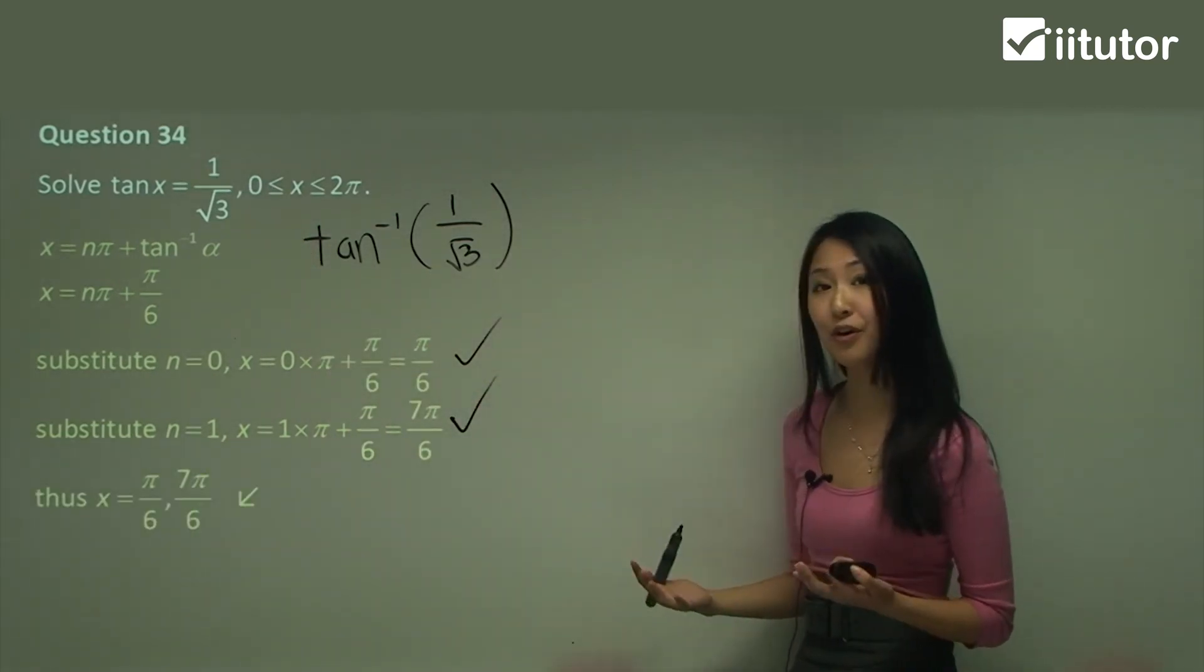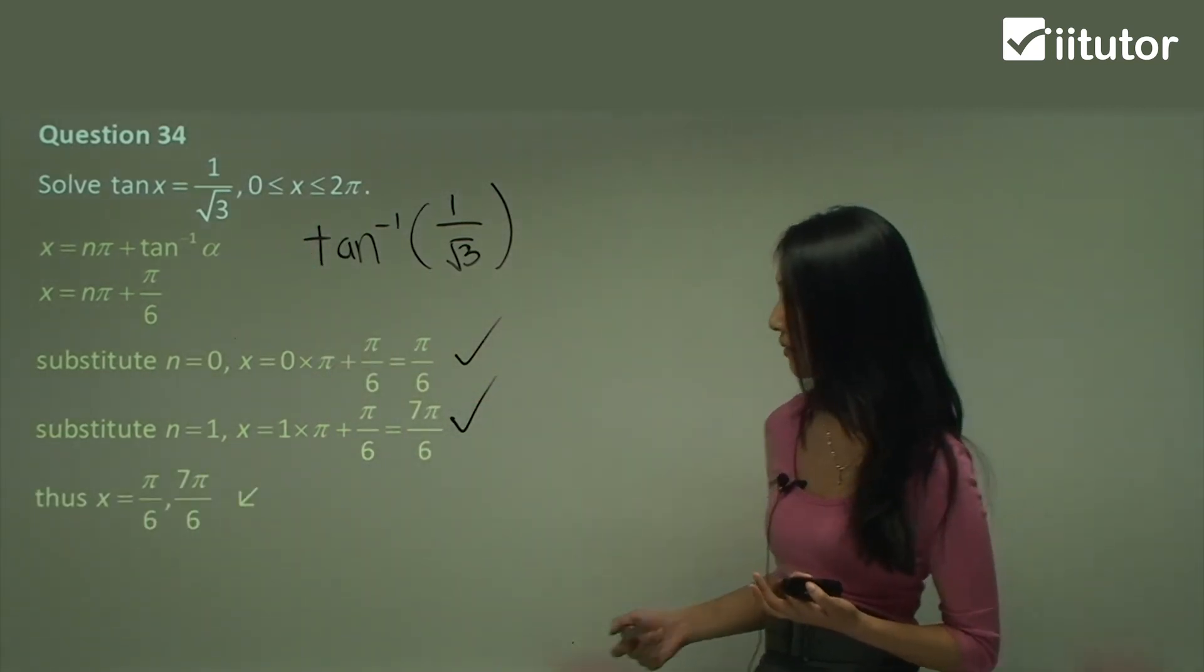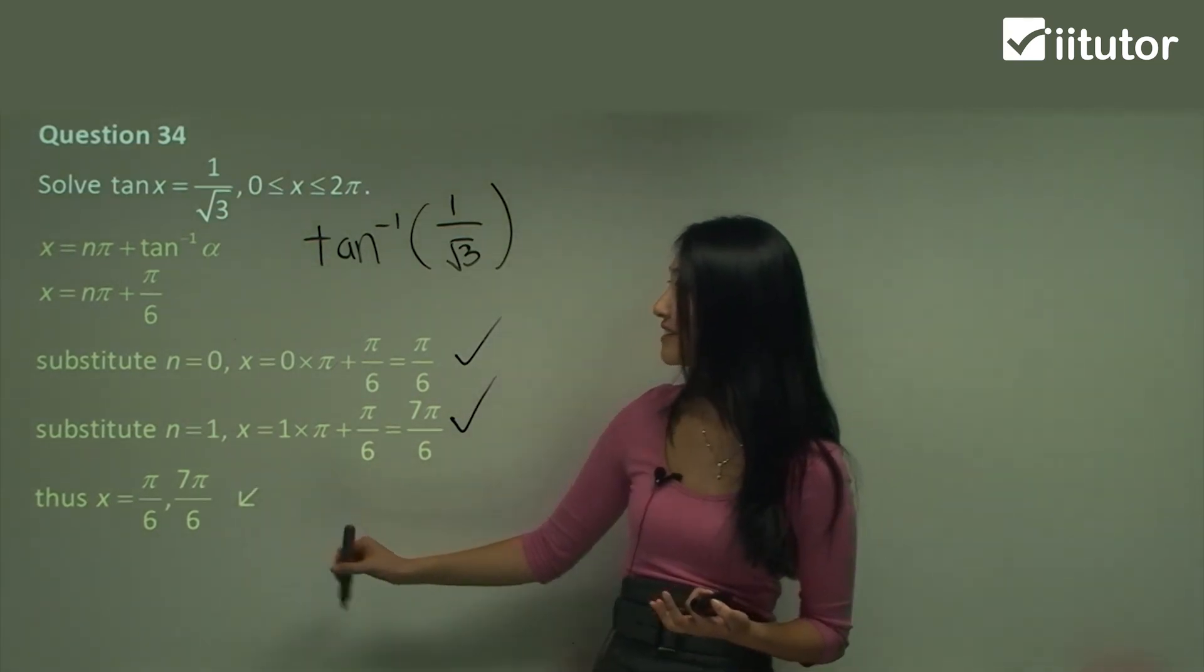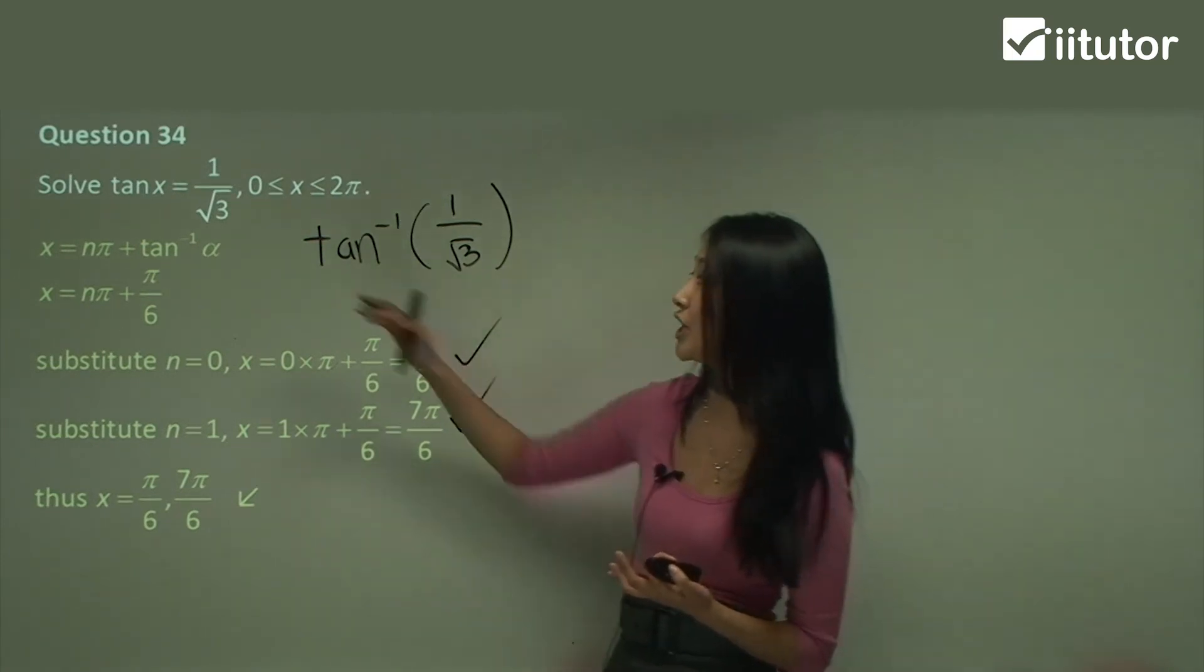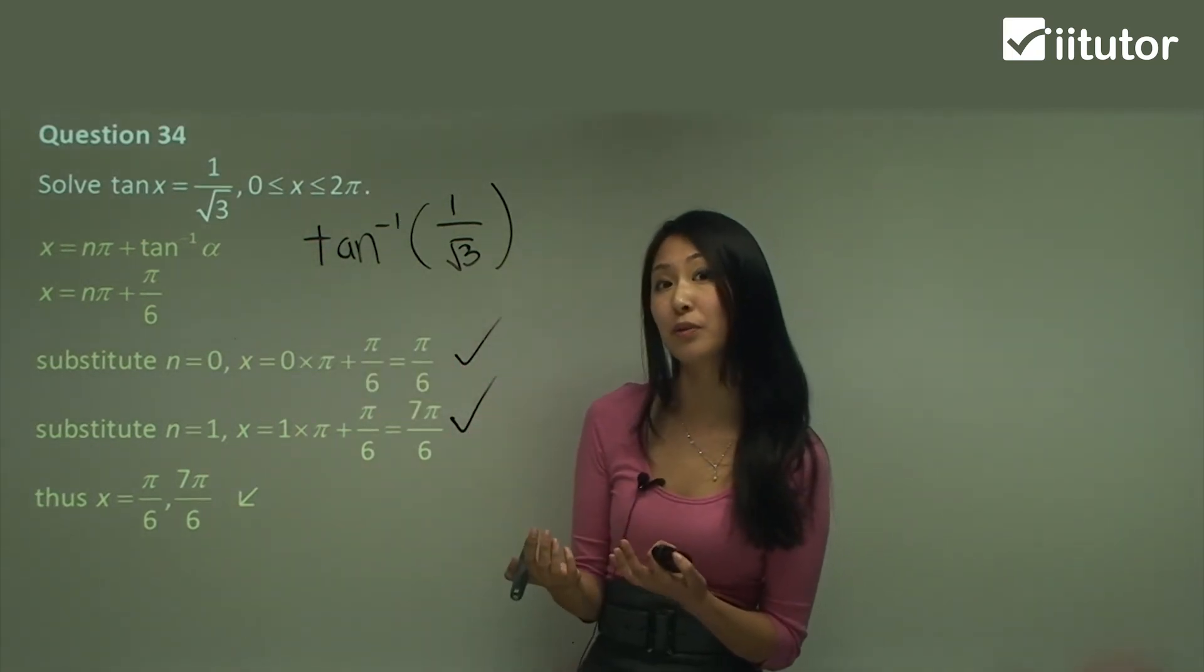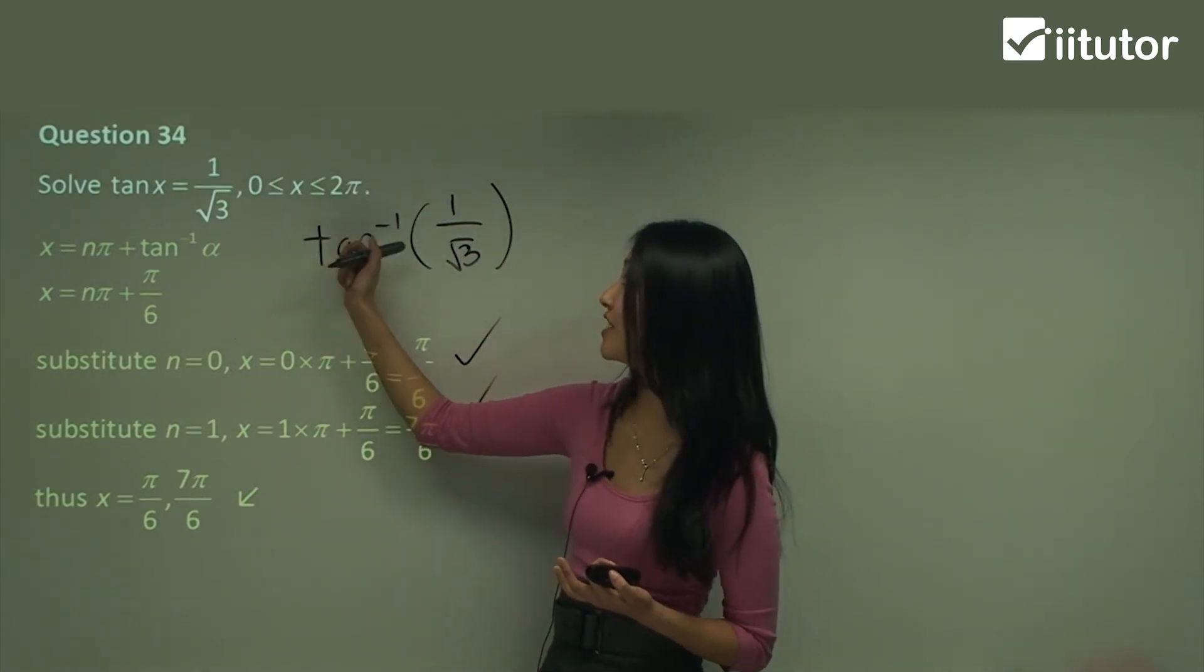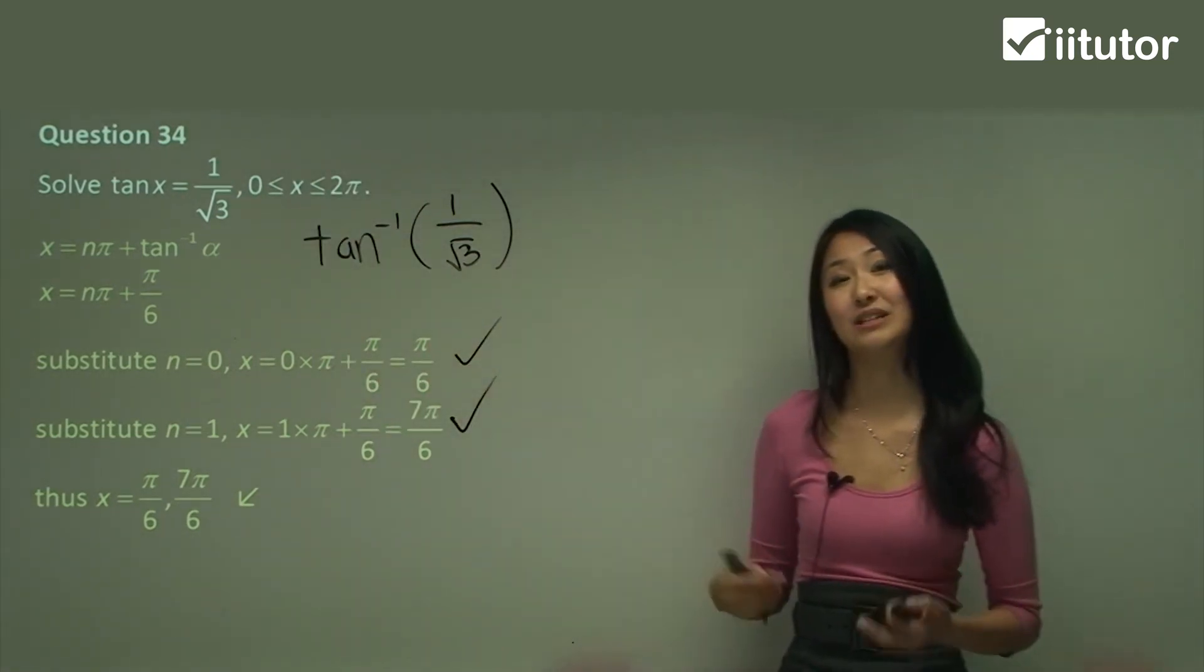Therefore, your two values are just going to be pi on six and seven pi on six. So once again, you've seen how we can actually use the general solution in more than one way, that we can use it to solve these equations for between a certain domain.